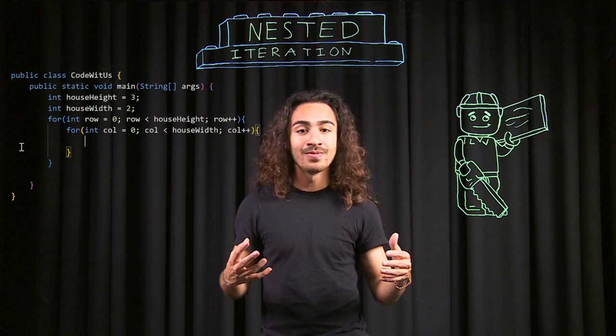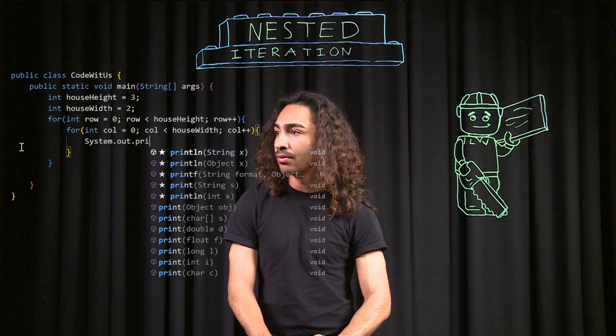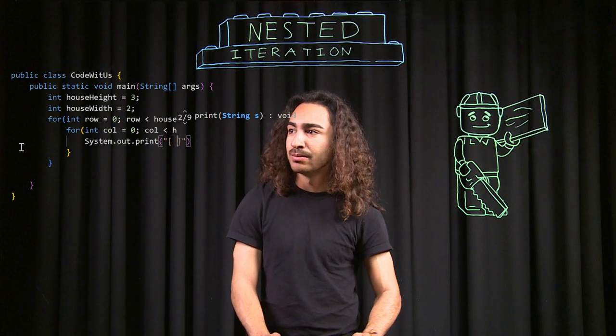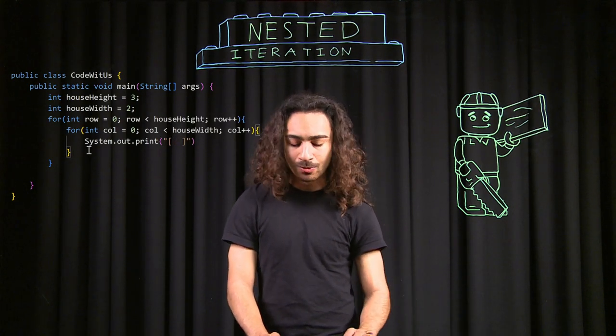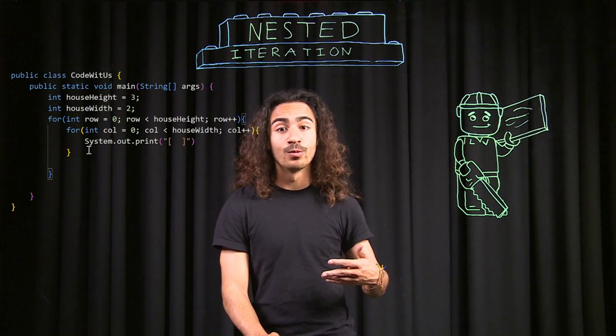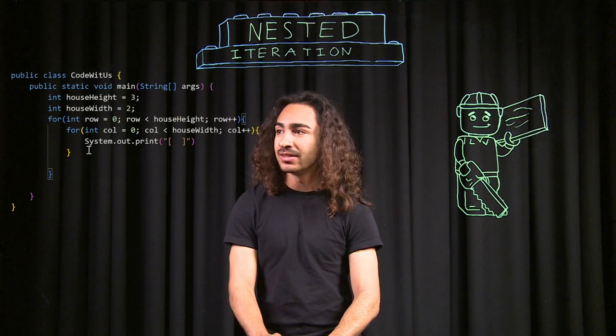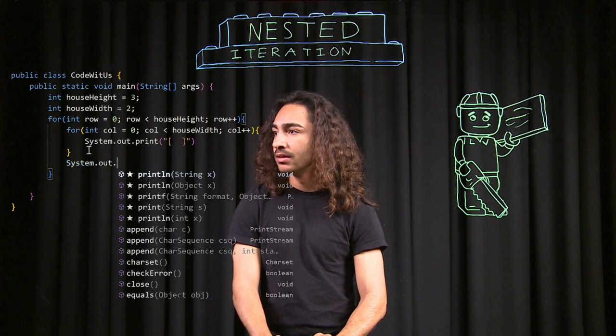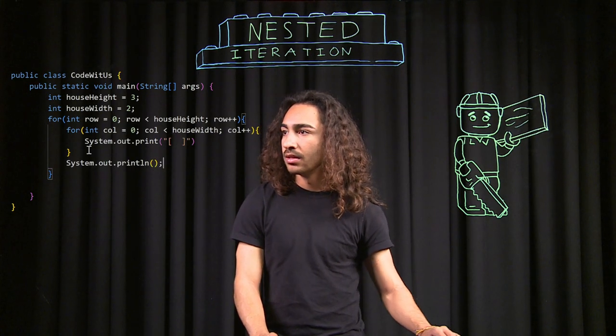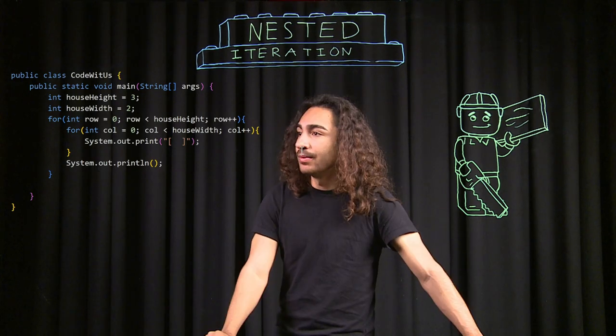I want to print out my house of bricks inside the terminal. For all the bricks in one row, I want them to be on one line. So in my for loop for columns, I'm going to be printing out one brick at a time using System.out.print, and this symbol will represent our bricks. Once we've printed all our bricks in a row, we want to move up one row — so we use System.out.println to go to a new line. And I forgot my semicolon there, but now we have our code.